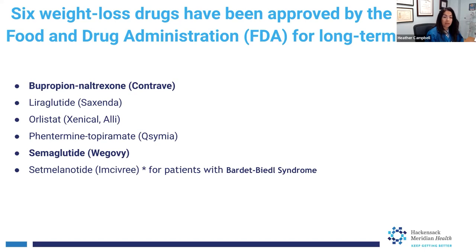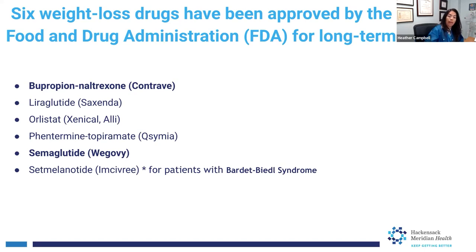The next two, Wegovy and Saxenda, are both GLP-1 agonists. They are injectable medications started at a low dose and slowly advanced to a higher dose. They decrease appetite by essentially giving you the feeling of fullness because the stomach doesn't empty as quickly.